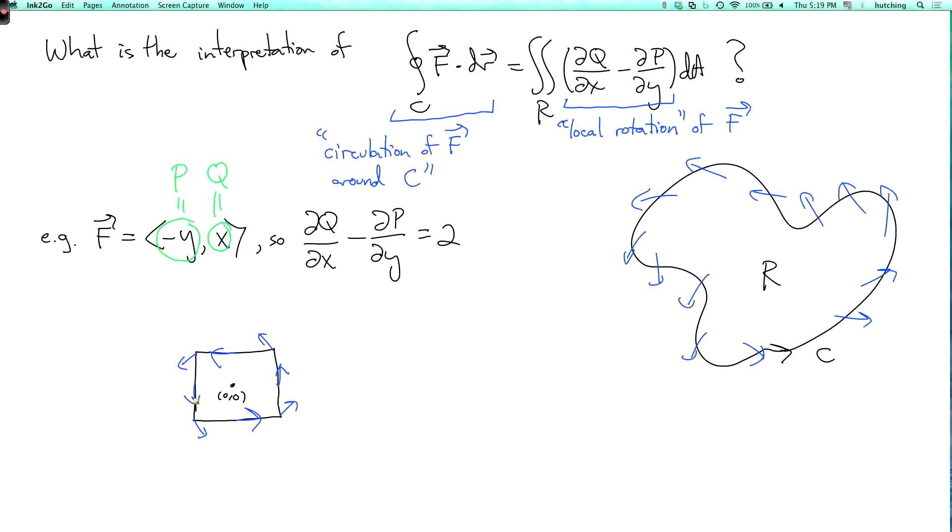So in general this dQ/dx minus dP/dy is some measure of some kind of local rotation of the vector field. And then when you add up that local rotation over the whole region R you get the sort of total circulation around the boundary of the region R. So that's the rough idea. If that didn't really speak to you that's okay, but this is just some sort of intuition to keep in mind as we're now going to generalize the whole story to three dimensions.